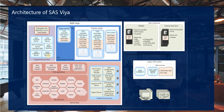SAS Viya architecture is a multi-user cache server — a multi-tenant architecture. We have two types of architecture: first is the single machine architecture, and we also have the distributed environment. This is a distributed environment showing how SAS Viya will work. You can see here all the web services.